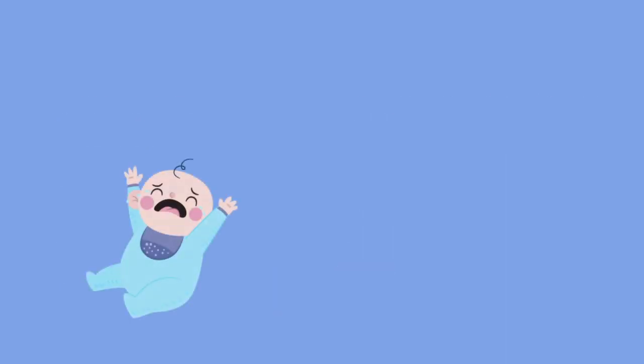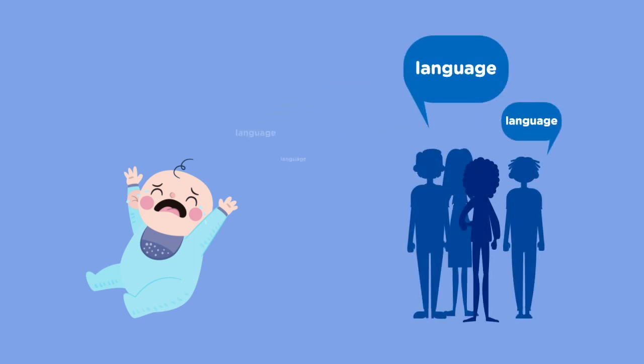When we are born, we begin to assimilate or absorb the language system or langue. This system exists as a result of an unwritten agreement between the members of the community. So one individual has no control over language since language is a social phenomenon and is stored in the minds of all people.